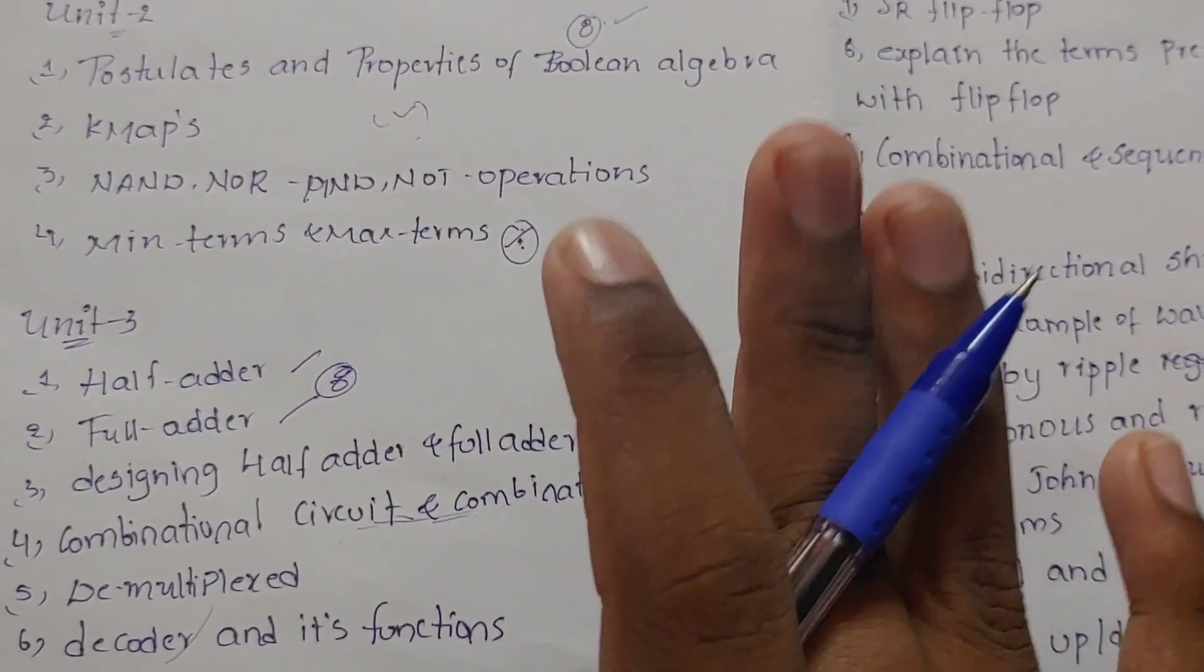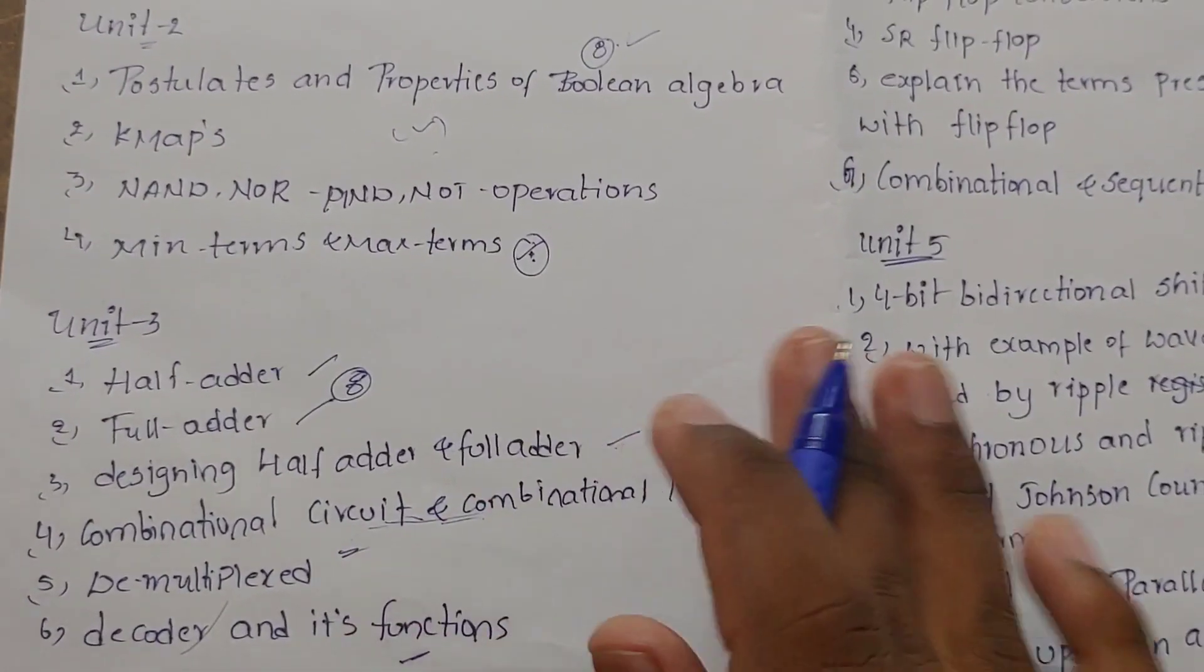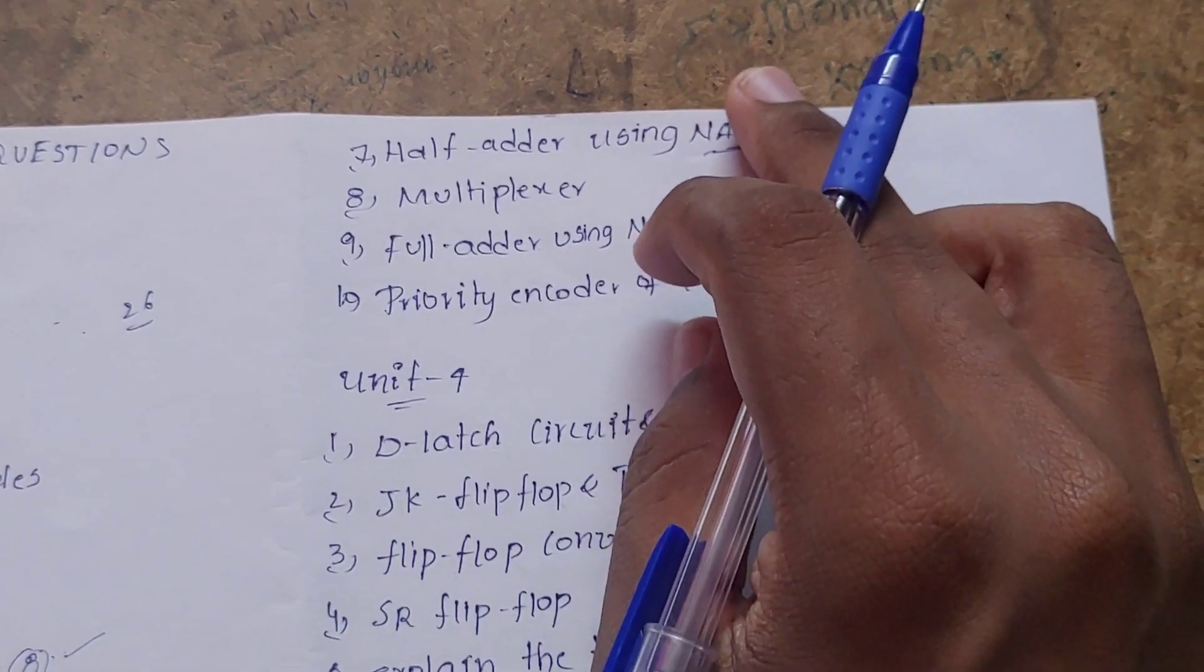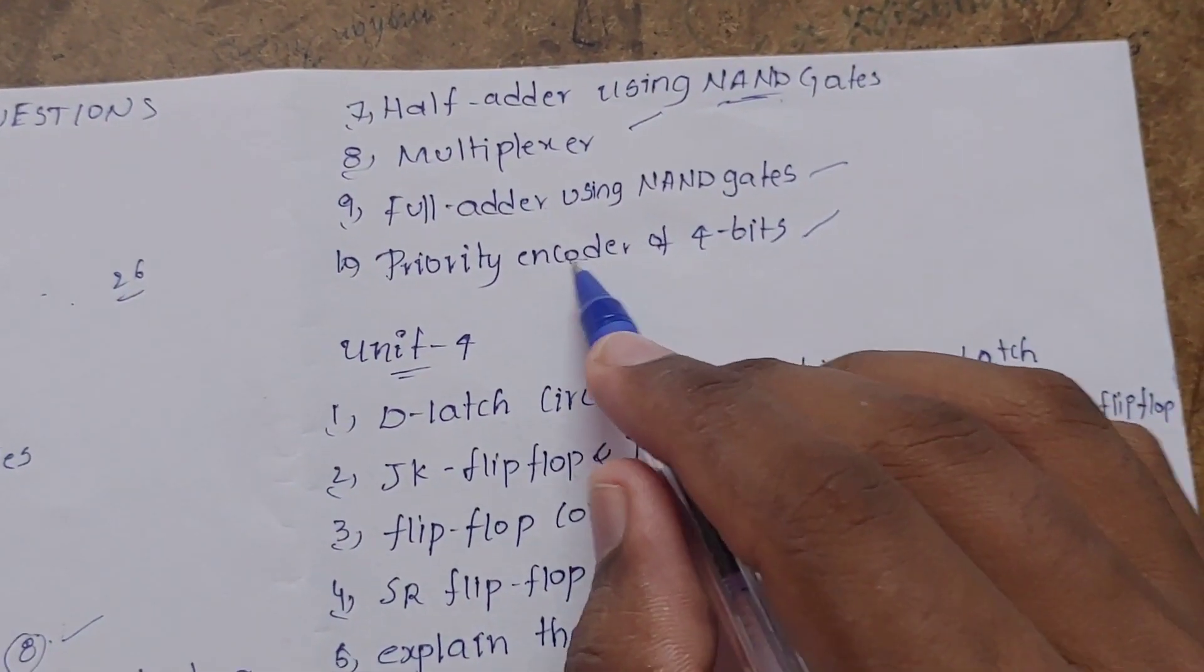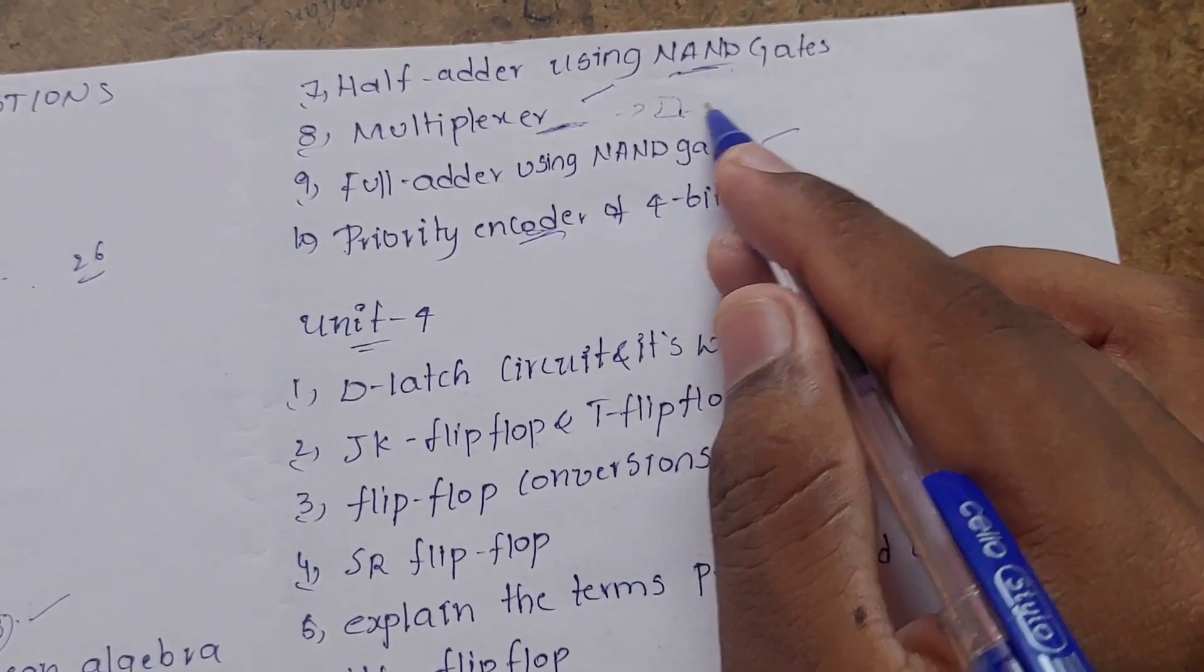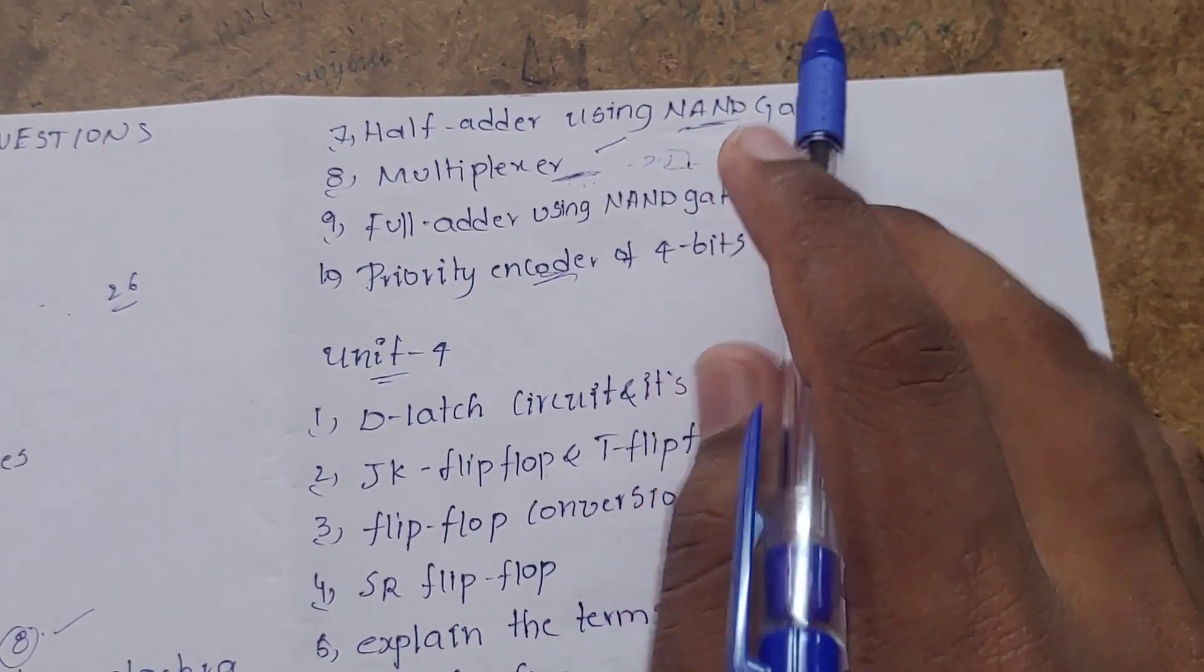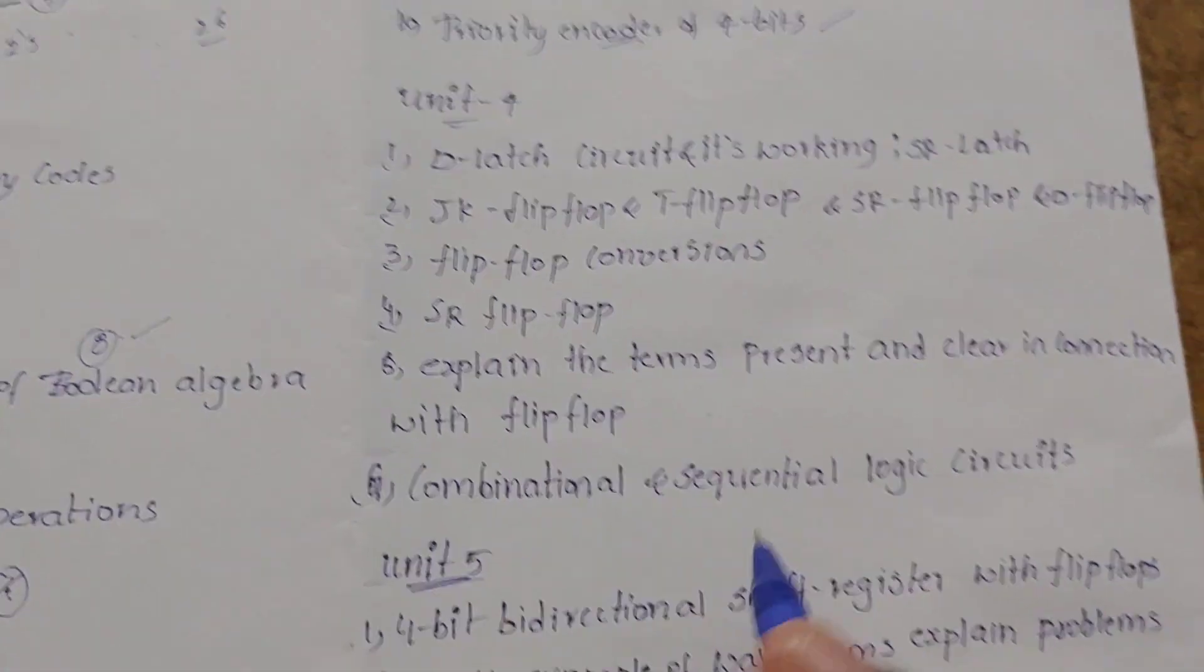There's decoder, then D-multiplexer, and half adder using NAND gates. Unit 2 is 8, 8, 8, and 8. Then multi-plexer and full adder using NAND gates. Then priority encoder. The encoder is easy and multi-plexer is easy. The diagram is very simple. Half adder and full adder are easy to use.